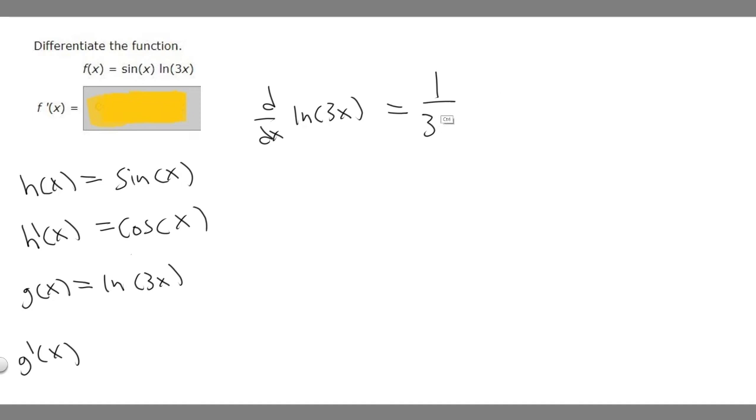So this is going to become 3/(3x). And you can simplify that, but I'm not going to because we don't need to. So g'(x) = 3/(3x).